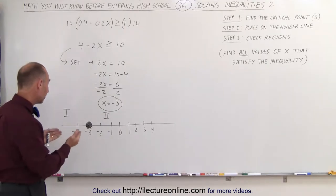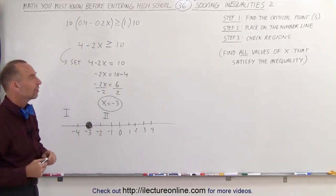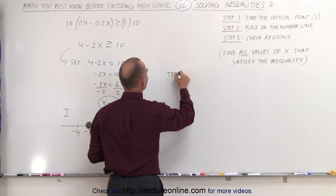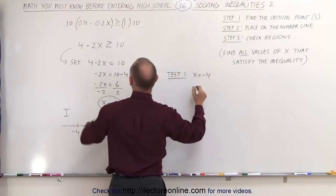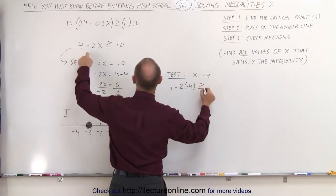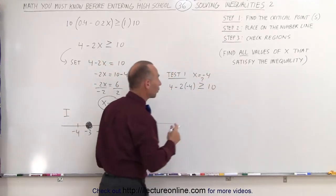To do that, we simply pick a point. For example, we'll pick -4 out of region 1 and test our inequality to see if it satisfies the inequality. So we're going to do test 1. We're going to let x = -4 and plug that in here. So we get 4 - 2(-4) ≥ 10? We don't know, we're going to find out.